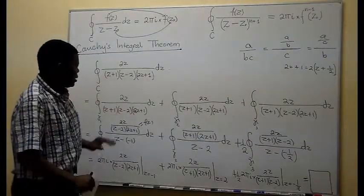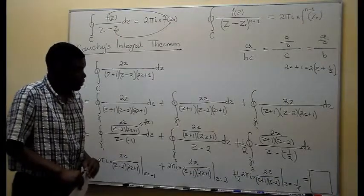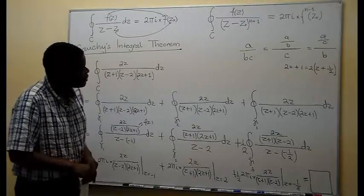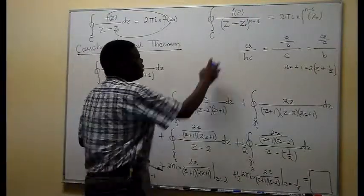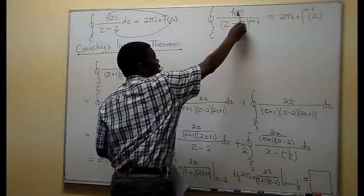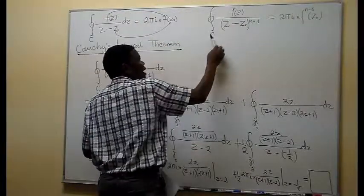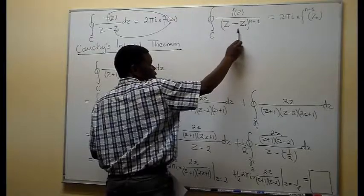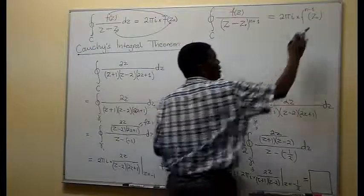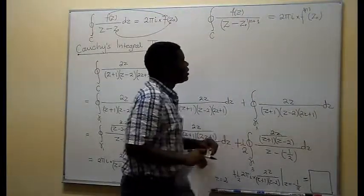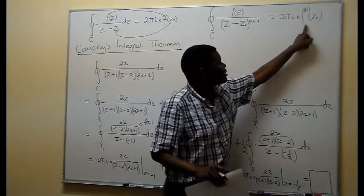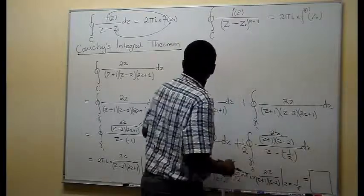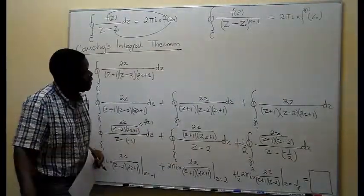That's how we apply Cauchy's Integral Formula. Now there is a second version of the formula: when the denominator has the form (z − Z₀)^(n+1) with f(z) analytic in and on the curve, but the pole is repeated n+1 times. In that case, the integral is evaluated by taking the nth derivative of the function evaluated at Z₀ and multiplied by 2πi.